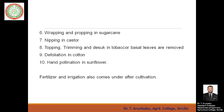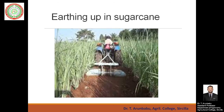Defoliation in cotton involves removal of leaves. Hand pollination in sunflower means rubbing the sunflower head by hand to increase pollination. Fertilizer application and irrigation also come under after cultivation practices.